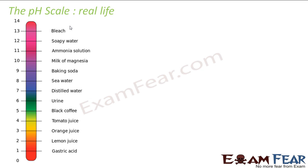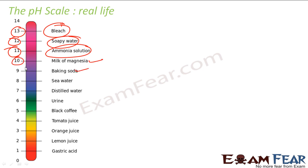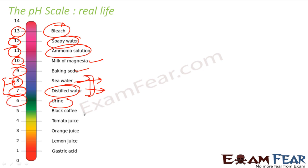There's a pH scale. If you see in real life, bleach has pH 13. Soapy water has pH 12. Ammonia solution has pH 11. Milk of magnesia has pH 10. Baking soda used in cooking has pH 9. Normal seawater has pH of 8 - it's a little basic. Distilled water has pH 7. Urine has pH 6 - it's a little acidic. Coffee, tomato juice, orange juice, lemon juice, and gastric acid are all acidic. Gastric juice is most acidic at pH 1. If you're curious, you can take a pH meter and find the pH of different leaves, water, and stuff around you.